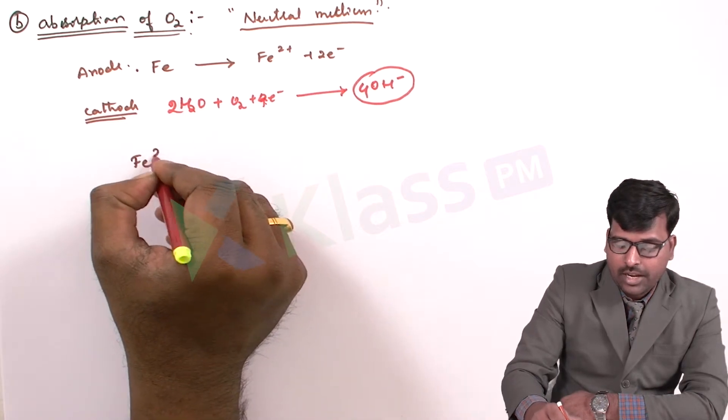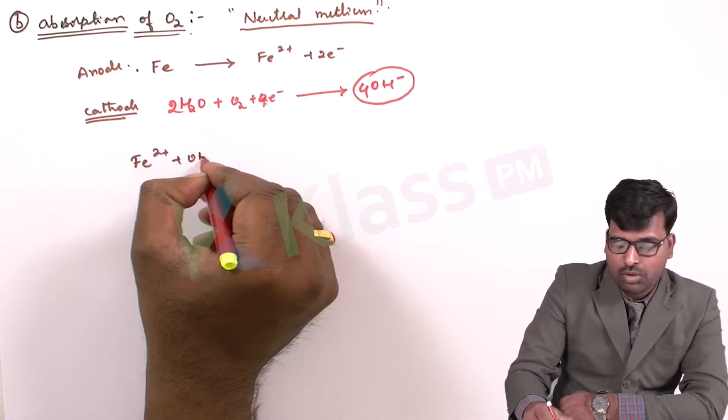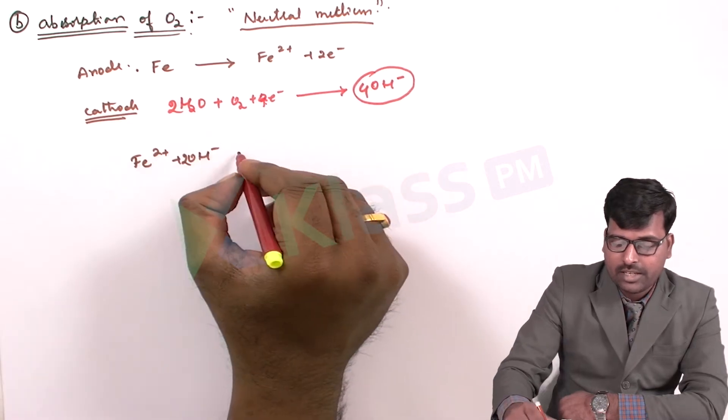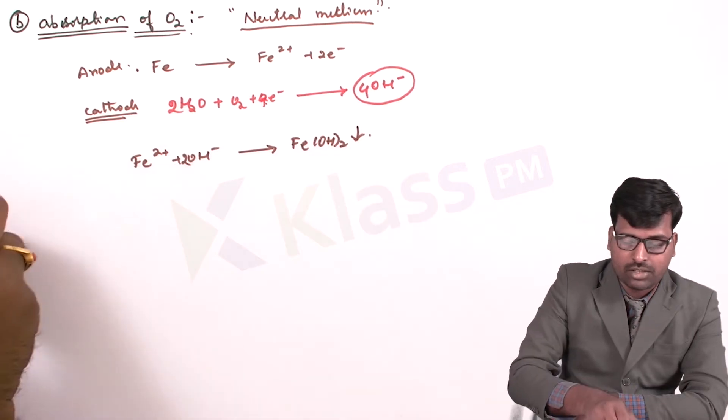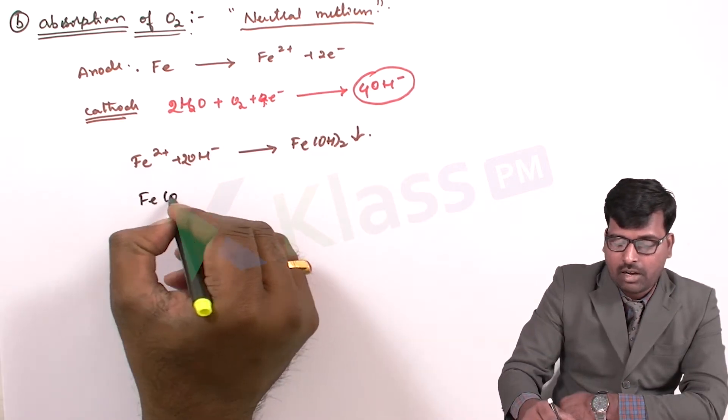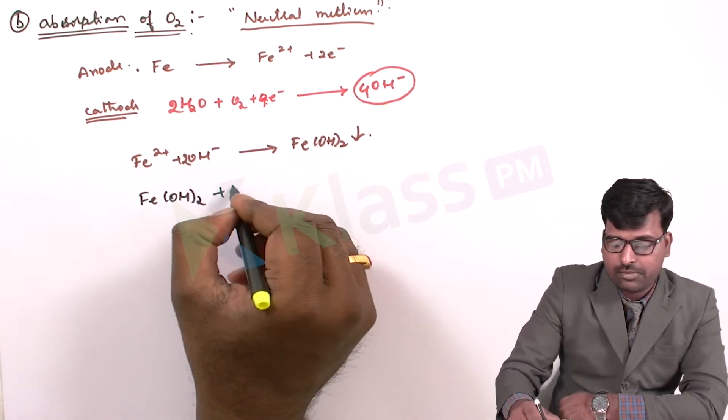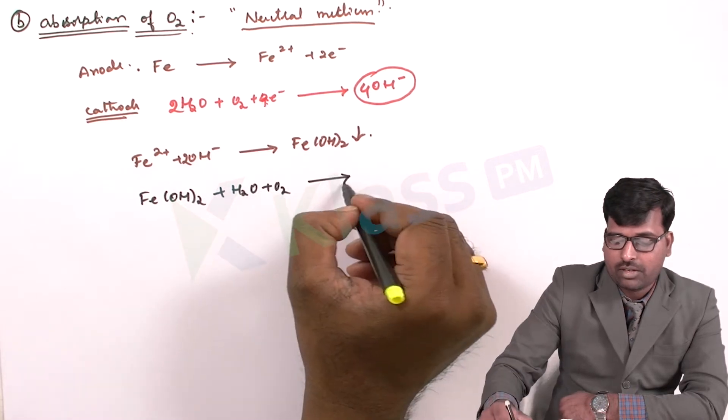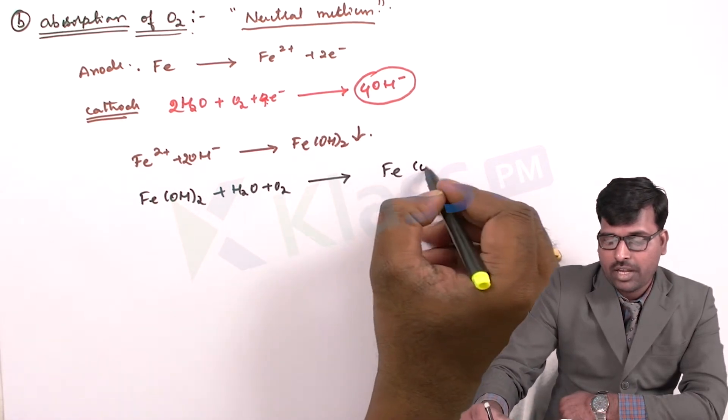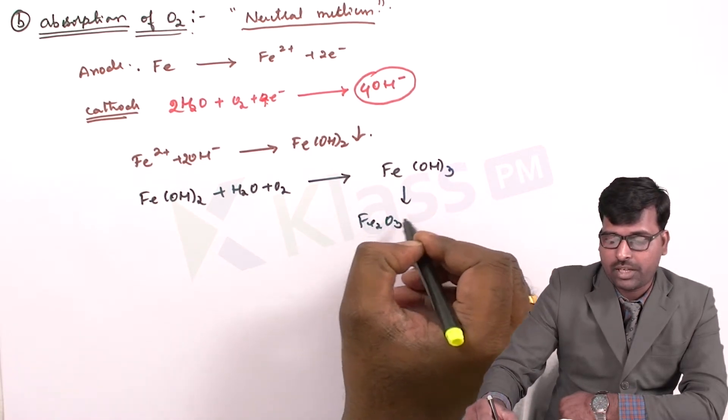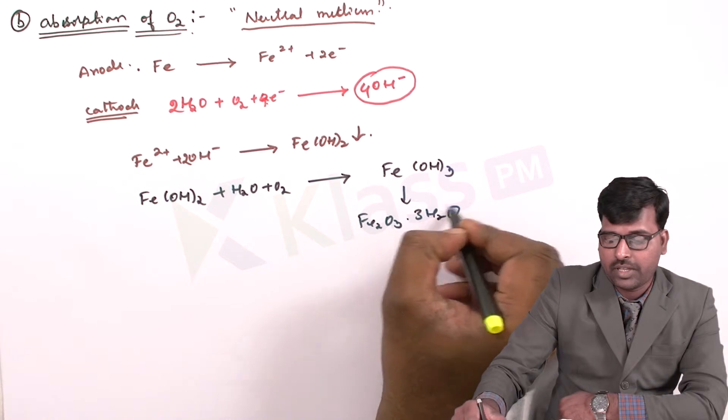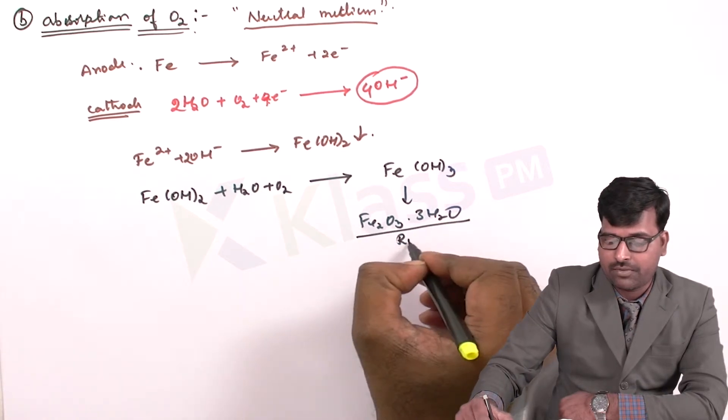Fe2+ plus OH-, two OH- will give rise to Fe(OH)2 or ferrous oxide. And further oxidation of ferrous oxide will give rise to Fe(OH)3. And that is what the Fe2O3·3H2O, that is the rust formula.